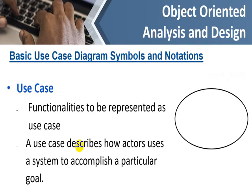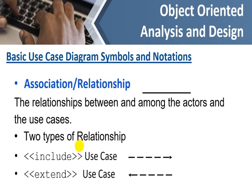The use case itself is shown with an oval, and we write the name of that functionality inside it. For example, if a student registers a course, 'register' is the functionality; if a student drops a course, 'drop' is the activity. We write that verb inside the use case oval. A use case describes how an actor uses the system to accomplish a particular goal.